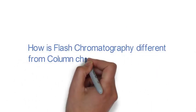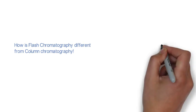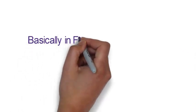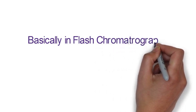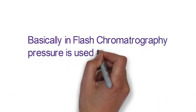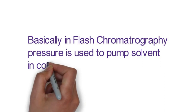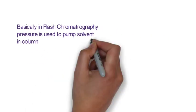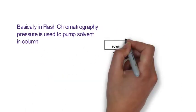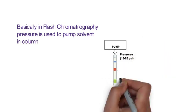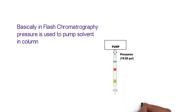How is flash chromatography different from column chromatography? Basically, flash chromatography uses a pressure to elute the solvent through the column, but column chromatography does not use any pressure. Now here you can clearly see that it is basically column chromatography having a pump.